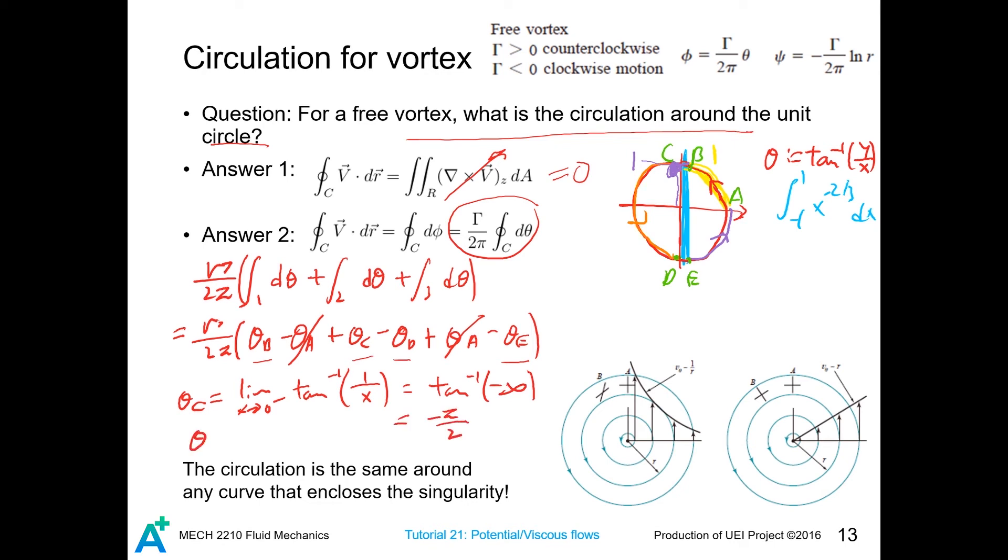Similarly, we have this result, and we combine all this result to give this integral equals gamma over 2pi times 2pi, and this is just gamma. So, we show that the circulation along the unit circle is indeed gamma.